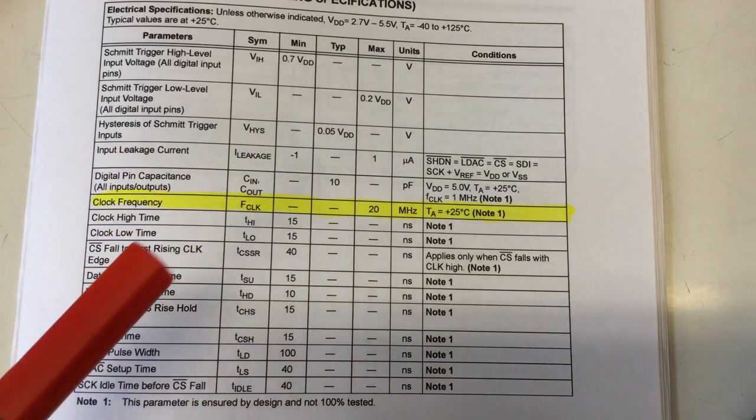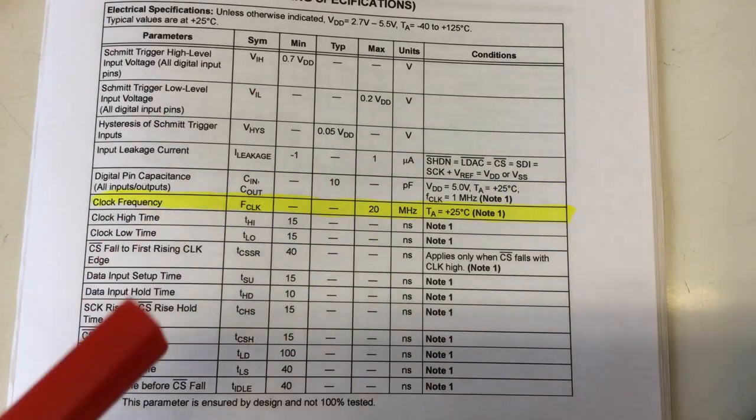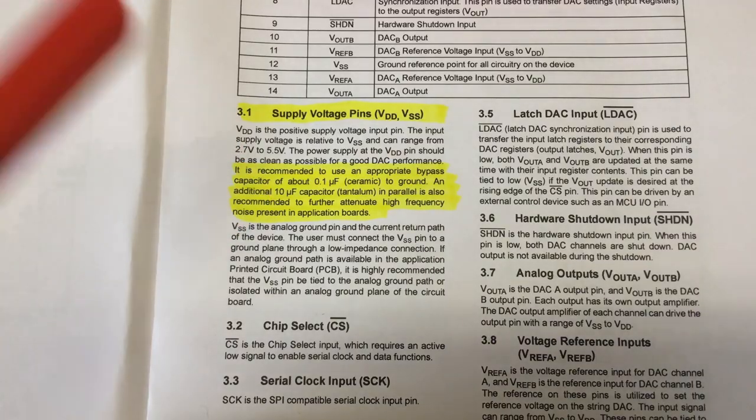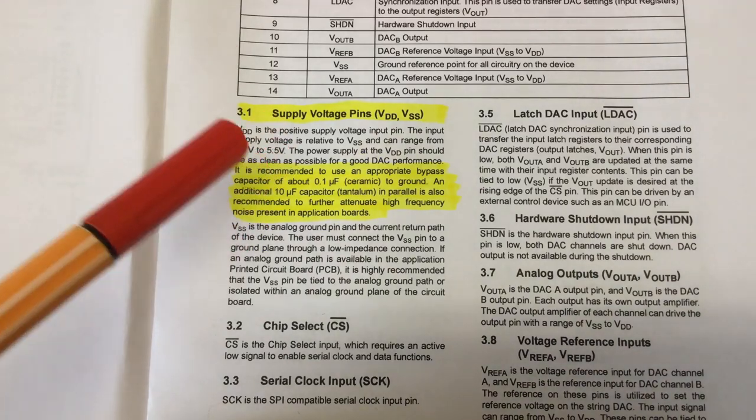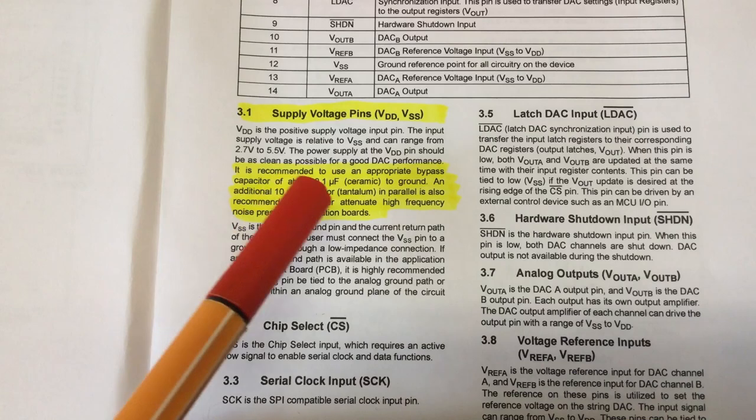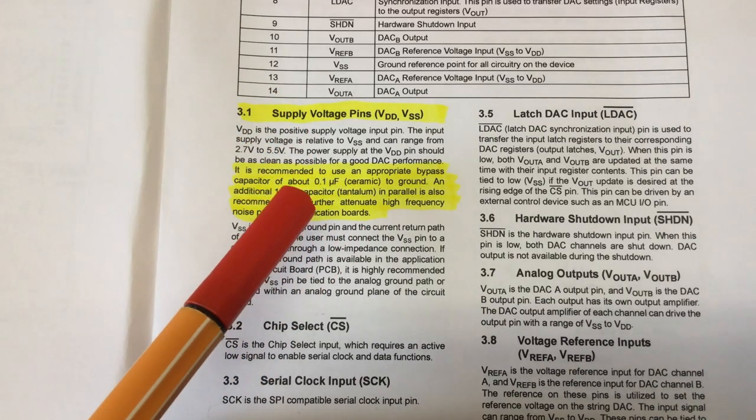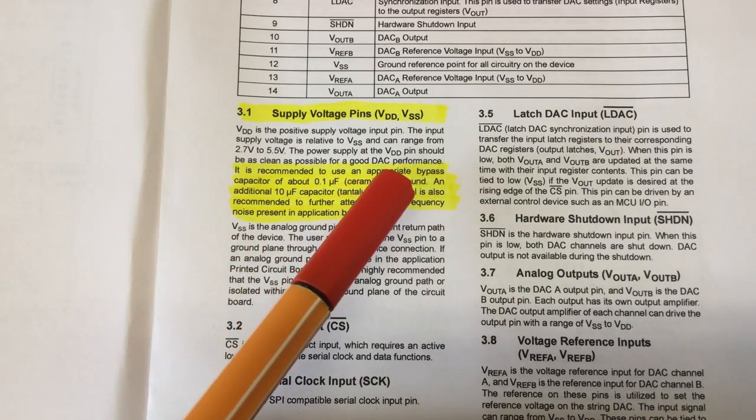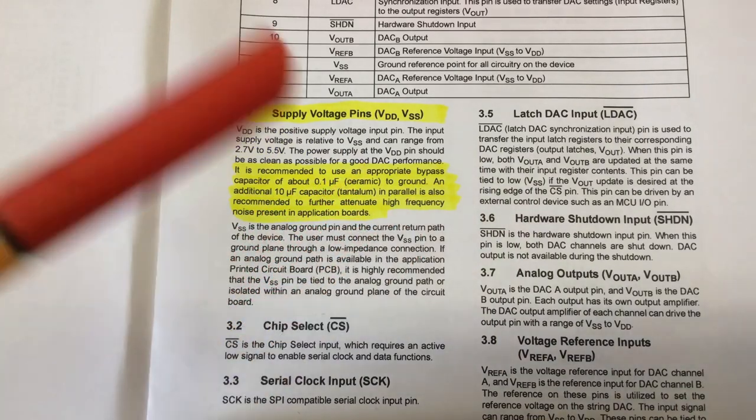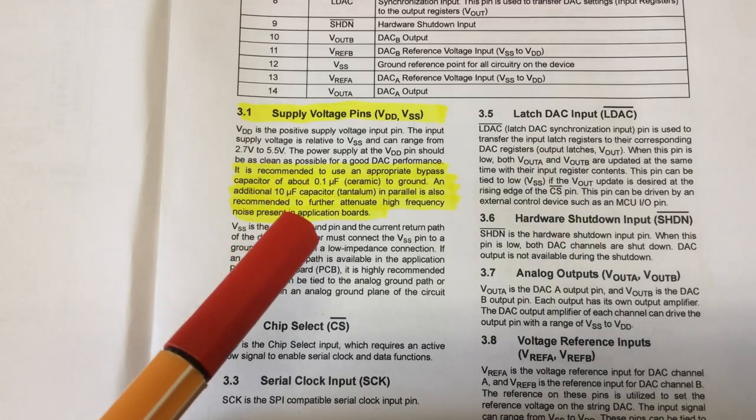Maximum SPI clock frequency is for all the DACs in the family 20 megahertz. And like the other MCP49 and MCP48 DACs, it wants two decoupling capacitors on its power supply: a 0.1 microfarad ceramic and a 10 microfarad tantalum. I will use a ceramic again, of course.